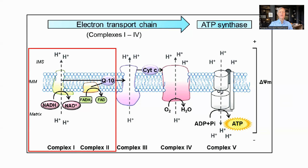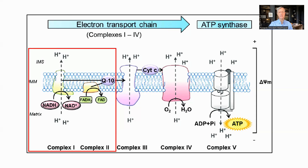Mitochondria generate ATP through a process called oxidative phosphorylation that uses four proteins called complex 1 to 4. This is the main source of energy in the body. They found that trigonelline increased the expression of complex 1 and 2, and so drove higher throughput and increased ATP production.